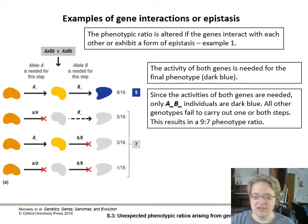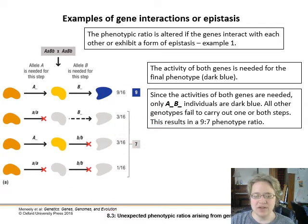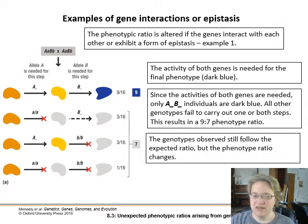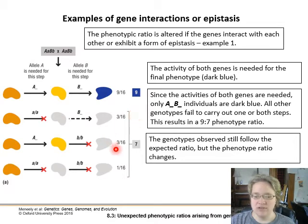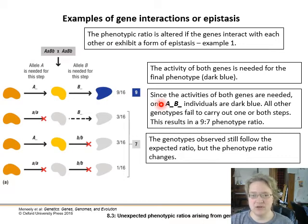We need functional dominant alleles for both genes. If we're missing any pathway step, we get the same phenotype for different reasons. So we see a 9:7 ratio — 9 out of 16 with a functional pathway, and 7 out of 16 that don't end up being functional. The genotypes are still there, but the phenotypes pool together. We add rather than multiply: 9 plus 7 equals 16 out of 16.